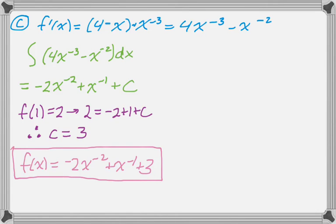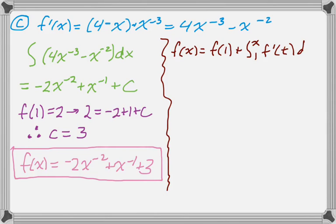Alright. So that's not so bad. There's actually a different way to do this problem. If you're a huge fan of the fundamental theorem, you might have set it up like this as an accumulation function. So f of x is f of 1 plus the integral from 1 to x of f prime of t dt. We're using t there to avoid having a confusing relationship between the variables.